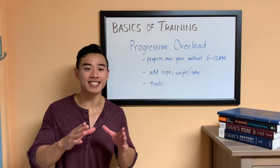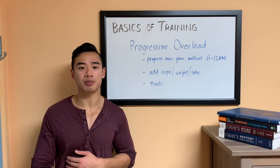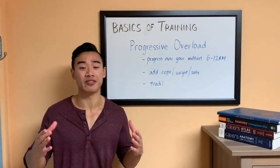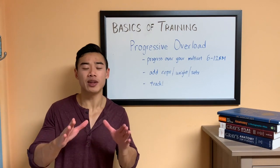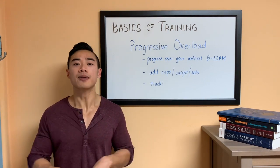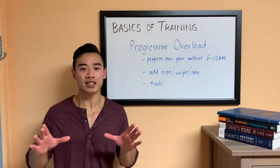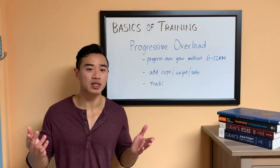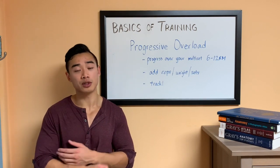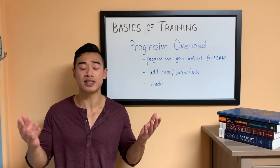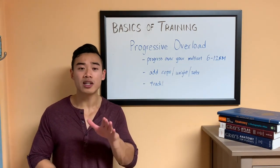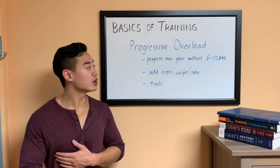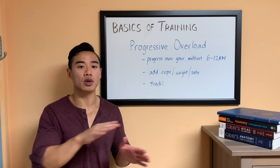The reason I say multi-set 6 to 12 rep max is because hypertrophy is related to the total amount of volume you do over a session. Say you hit one set of 10 really hard and set a PR for that 10 rep max, but the rest of your workout falls off and you use a lot less weight and fewer reps — your total volume for that session is still lower. So in terms of progressive overload, we should be tracking our progress over multiple sets.